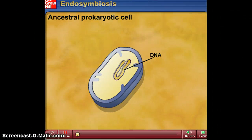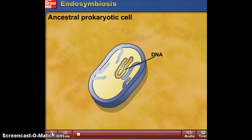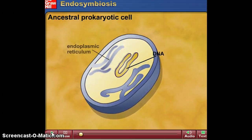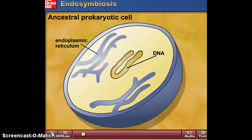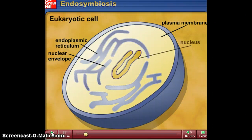Here's a quick review of endosymbiosis. We have an ancestral prokaryotic cell that has DNA in the middle and a cell wall on the outside — there's no nucleus. Over time, the membrane infolds, eventually becoming the endoplasmic reticulum, and as it infolds around the DNA, it becomes the nucleus.